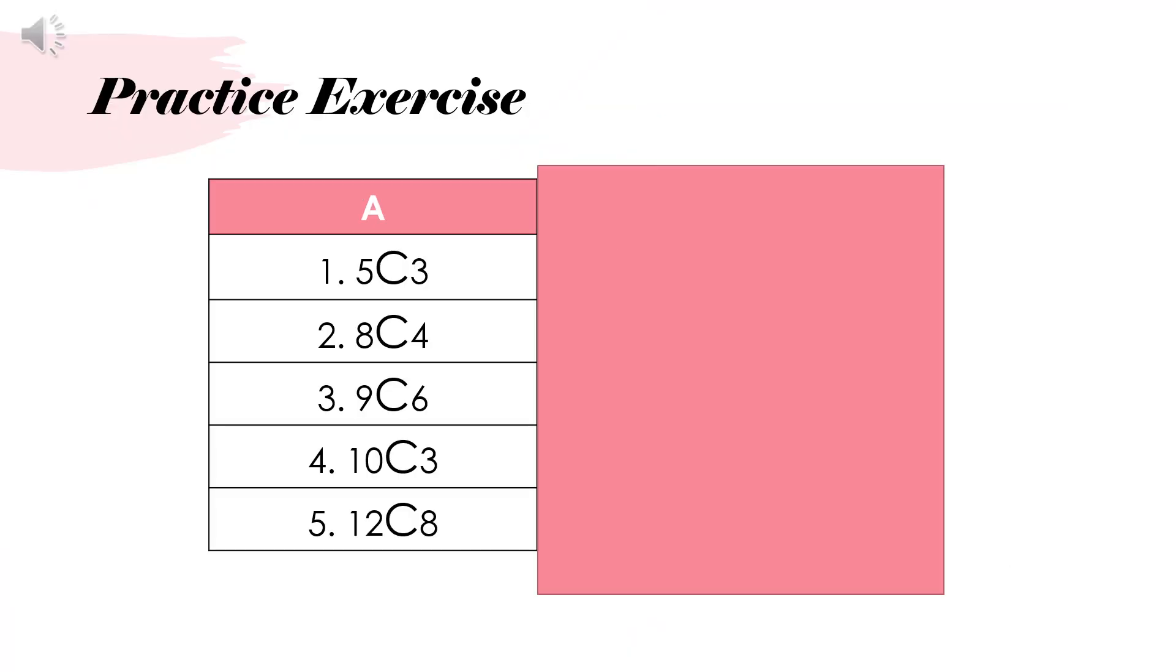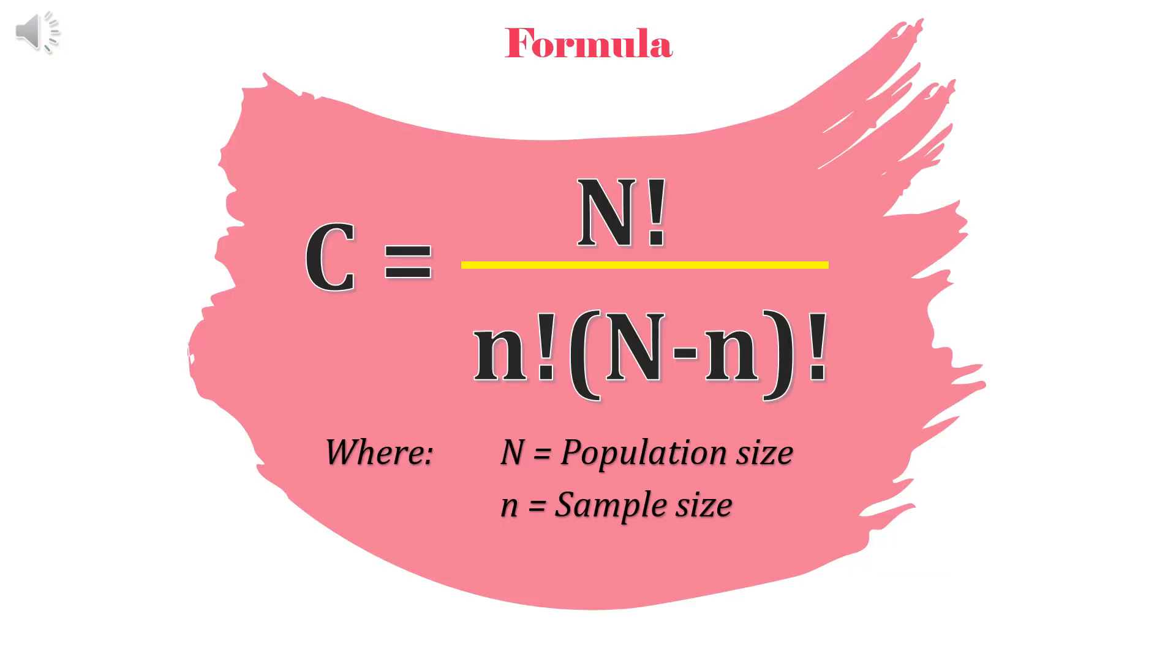Now let's see if you understood our lesson. Let's have a practice exercise. You will get one half crosswise, and then write these 5 items.